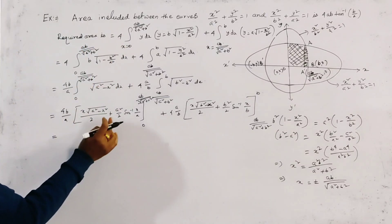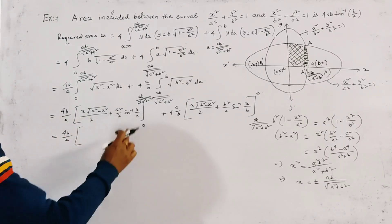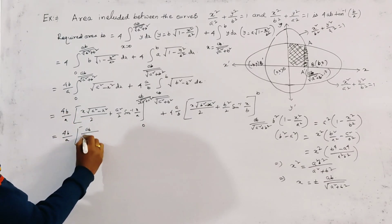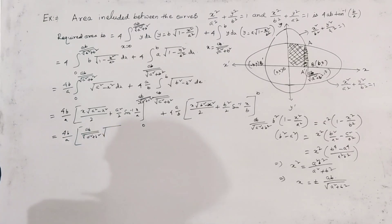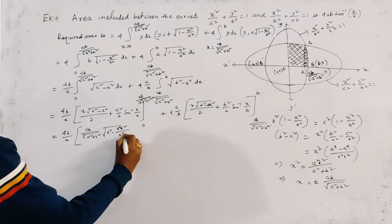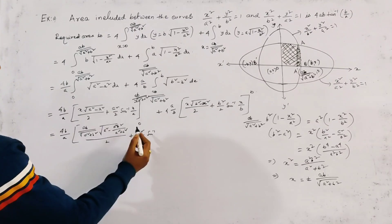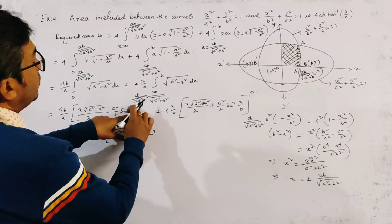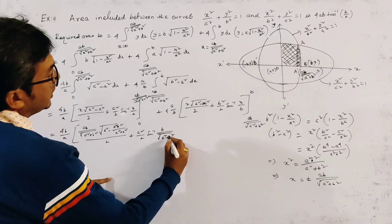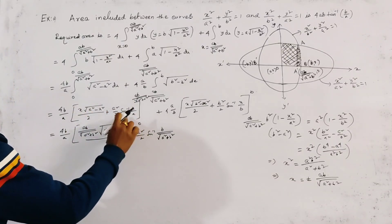Putting in the upper and lower limits for the first integral: at the upper limit x = ab/√(a² + b²), we get ab/√(a² + b²) · √(a²b²/(a² + b²))/2 + a²/2 · sin⁻¹(b/√(a² + b²)). At the lower limit x = 0, everything is 0 since sin⁻¹(0) = 0.